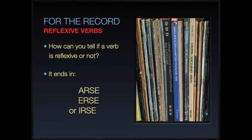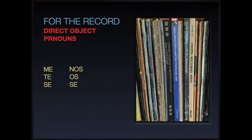So you see the same infinitive endings — ar, er, and ir — but the 'se' is a placeholder, and those are going to be our direct object pronouns: me, te, se, nos, os, and se. The first 'se' is singular, the second 'se' is plural. Everything on the left side is singular, everything on the right side is plural, just like in our regular conjugations.